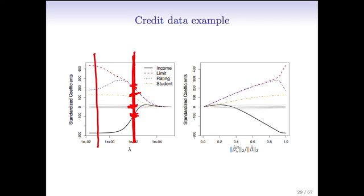An equivalent picture on the right now, we've plotted the standardized coefficients as a function of the L2 norm, the sums of the squares, the square root of the sum of the squares of the coefficients, divided by the L2 norm of the full least squares coefficients. The L2 norm of the vector beta 1 through beta p, it's written this way, the L2 norm. So it's the square root of the sum of beta j squared.